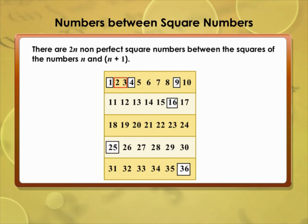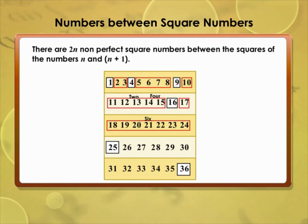Observe the non-square numbers between 1 and 4 — we have two numbers: 2 and 3. Between 4 and 9 we have four numbers: 5, 6, 7, 8. Between 9 and 16 we have six numbers. In between 16 and 25 we have eight non-square numbers, and in between 25 and 36 we have 10 non-square numbers.